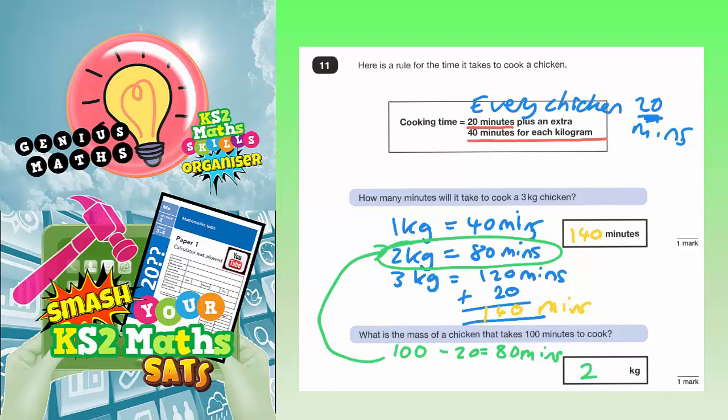Because it's going to have 80 minutes which is 40 from each kilogram. But then when you add on the 20 to 80 you get the 100 minutes. So your final answer is a 3 kilogram chicken takes 140 minutes to cook, and 100 minutes is going to be a 2 kilogram chicken.